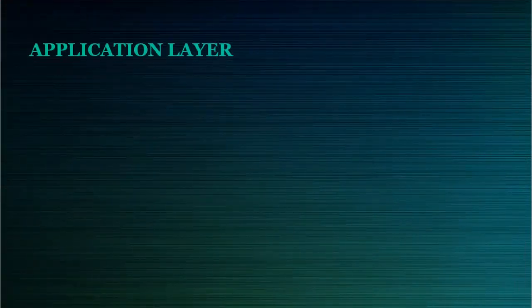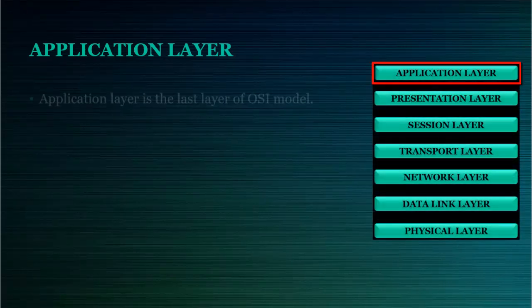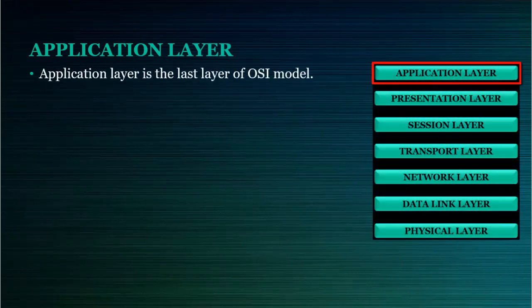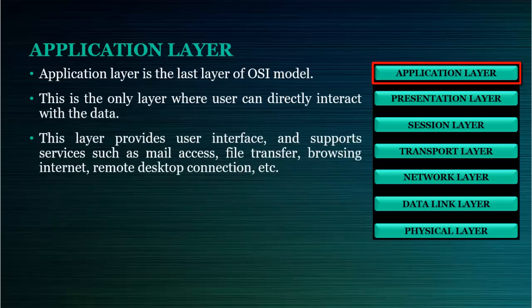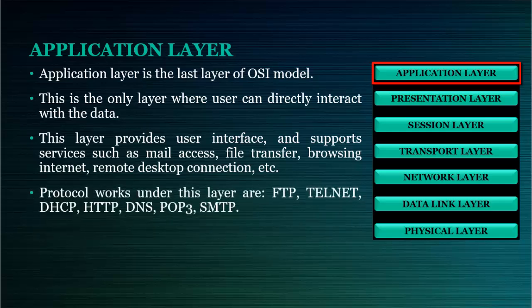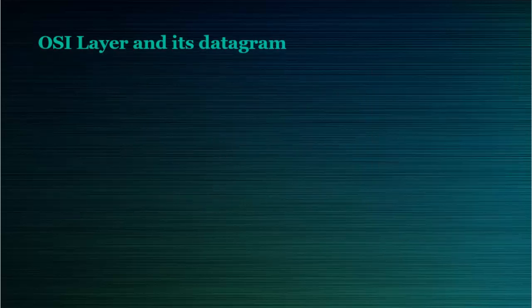Application layer is the last layer of OSI Model. This is the only layer where the user can directly interact with the data. This layer provides user interface and supports services such as mail access, file transfer, browsing the internet, remote desktop connection, etc. Protocols that work under this layer are FTP, Telnet, DHCP, HTTP, DNS, POP3, and SMTP.